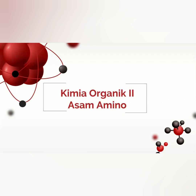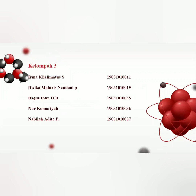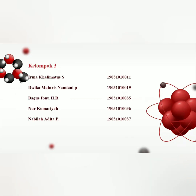Kami dari kelompok 3. Adapun sub-bab yang akan kita bahas: yang pertama, pengertian asam amino dan struktur asam amino; yang kedua, sintesis asam amino; yang ketiga, reaksi yang terjadi pada asam amino; yang keempat, klasifikasi asam amino; yang kelima, sifat asam amino; dan yang keenam, aplikasi asam amino.